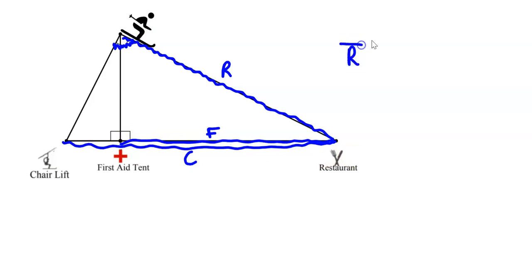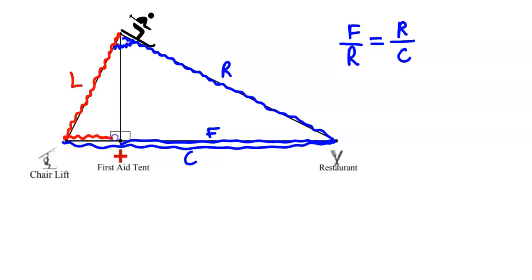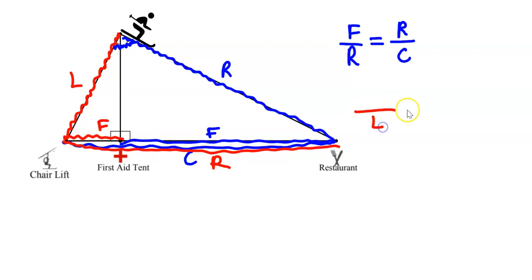R is the geometric mean, so we set that up with R listed twice diagonally — R is the geometric mean between F and C. The skier can also go down the left side of the mountain, L. Once the skier is at the bottom, the skier can go to the first aid tent, F, or all the way across to the restaurant, R. So L is the geometric mean of F and R — write L diagonally, and F and R on the other diagonal.